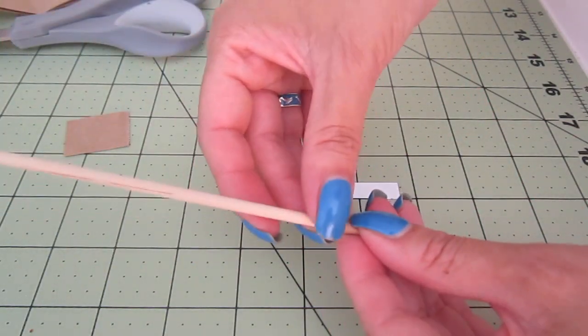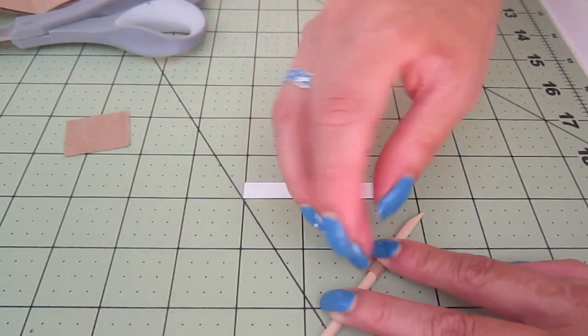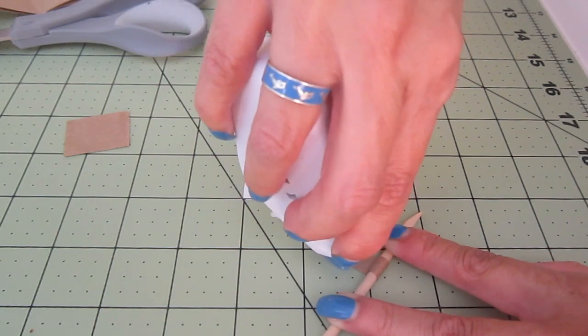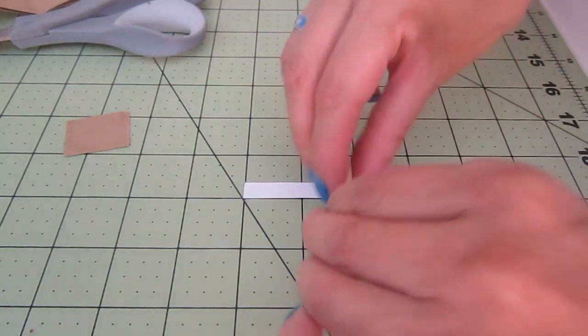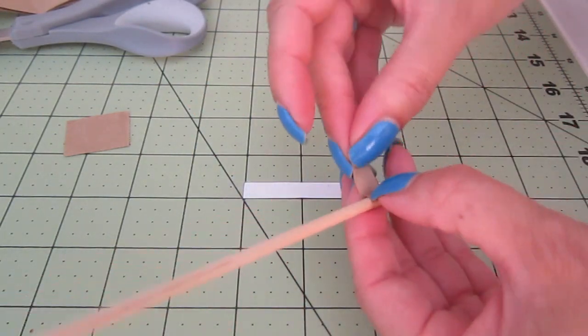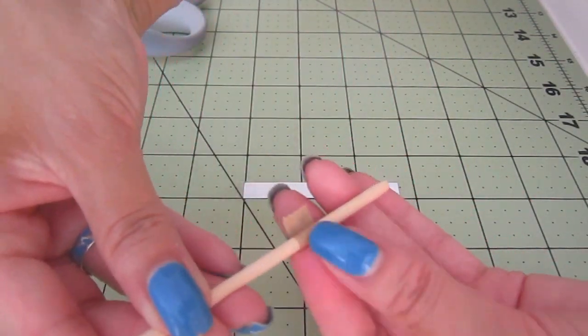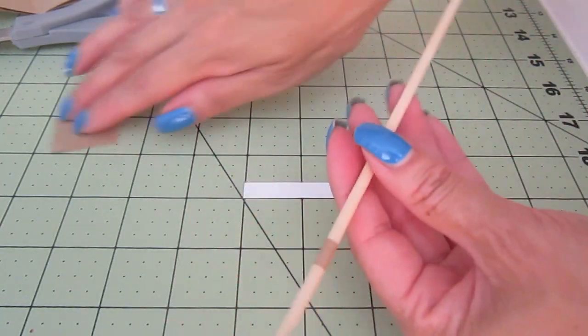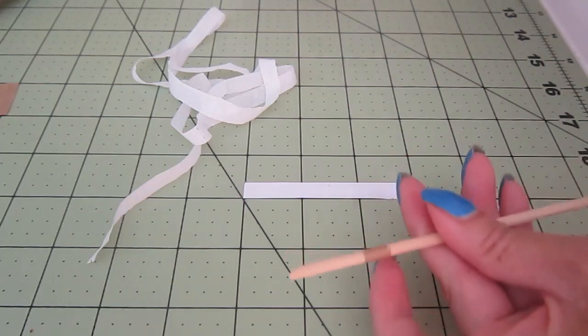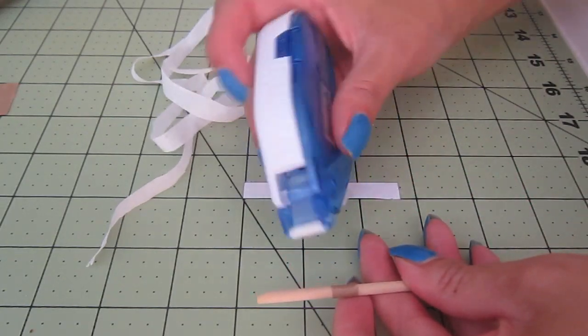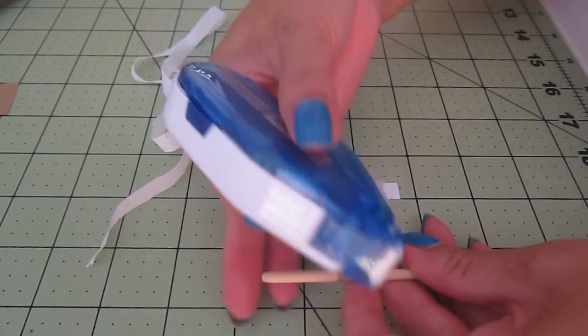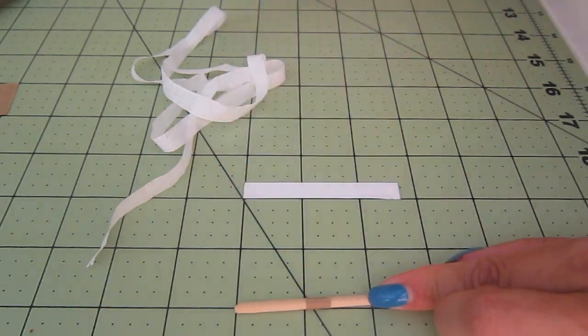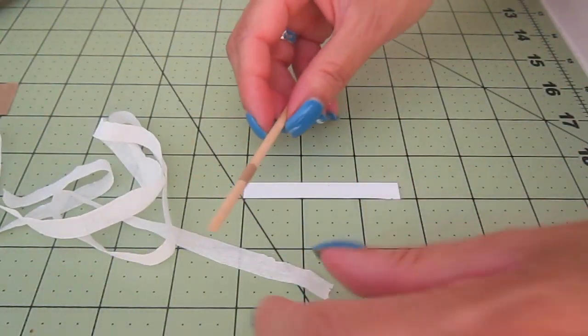Rolling it around the orange stick but not too tight because of course it's not going to stay there. And now I'll put a tiny little bit of glue. So this is my core. And I'll put a little bit more glue right here. And then I can get started rolling it.